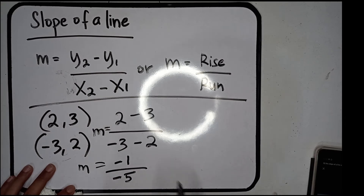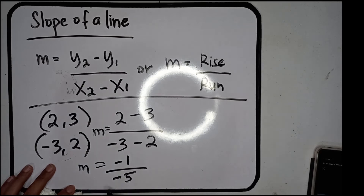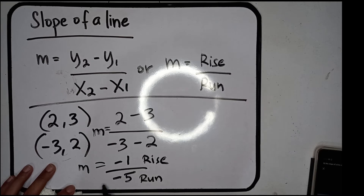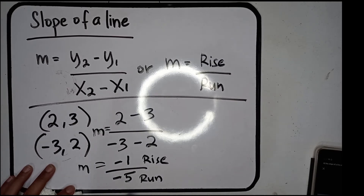So our slope is negative 1 over negative 5, which means as it moves backward 5 steps, it moves downward 1 step, because we have negative values.